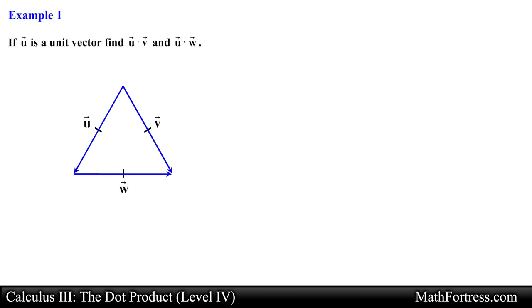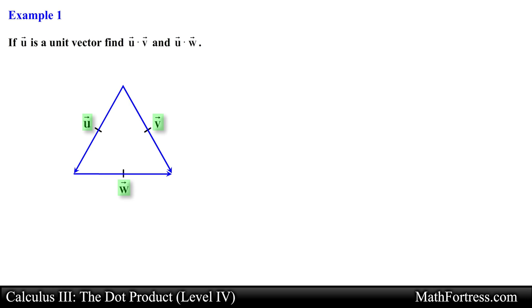If u is a unit vector, find u·v and u·w. Here we have an equilateral triangle with vectors as sides. We are asked to find two separate dot products: u·v and u·w. Let's first find u·v.